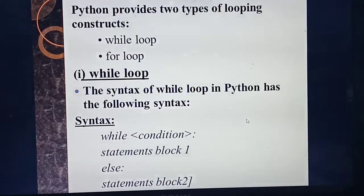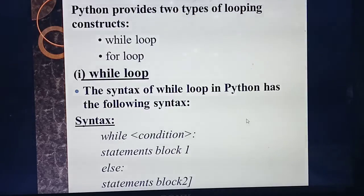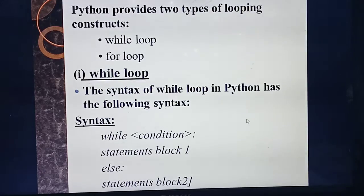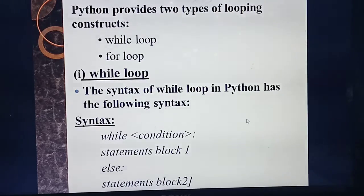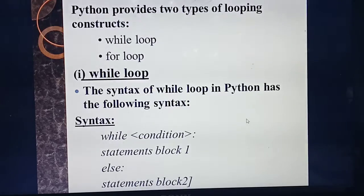In Python, as in C++, the loop concept is done using two constructs. Python provides two types of looping: while loop and for loop. The while loop syntax, for loop syntax, flowchart, and all related content including if, if-else, and nested if-else are very very important topics.